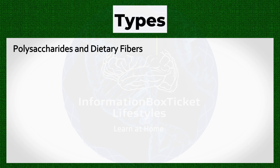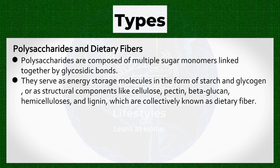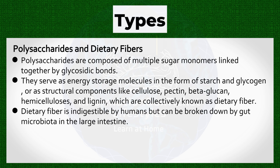Polysaccharides are composed of multiple sugar monomers linked together by glycosidic bonds. They serve as energy storage molecules in the form of starch and glycogen, or as structural components like cellulose, pectin, beta-glucan, hemicelluloses, and lignin, which are collectively known as dietary fiber. Dietary fiber is indigestible by humans but can be broken down by gut microbiota in the large intestine.